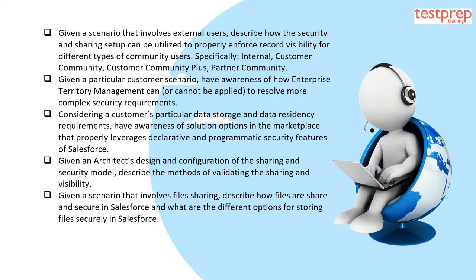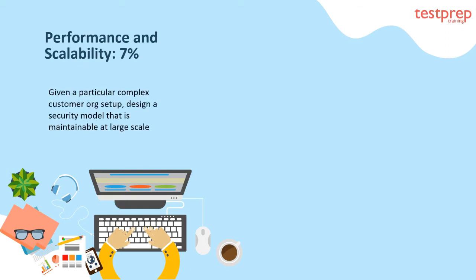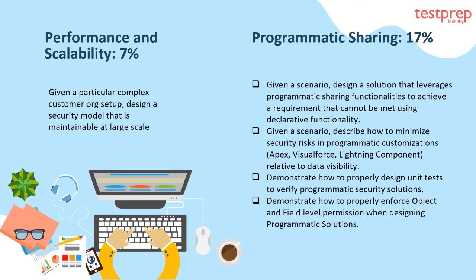Performance and Scalability at 7%: given a particular complex customer org setup, design a security model that is maintainable at large scale. Programmatic Sharing at 17% begins with: given a scenario, design a solution that leverages programmatic sharing functionalities to achieve a requirement that cannot be met using declarative functionality.